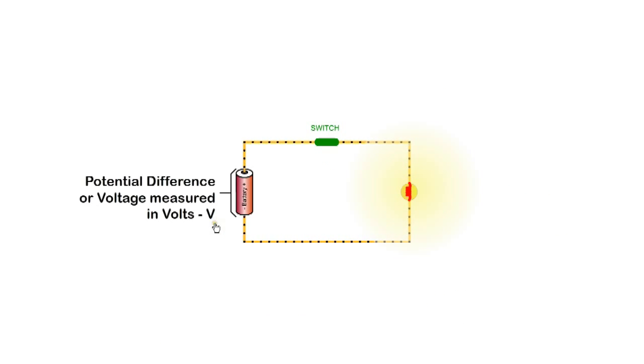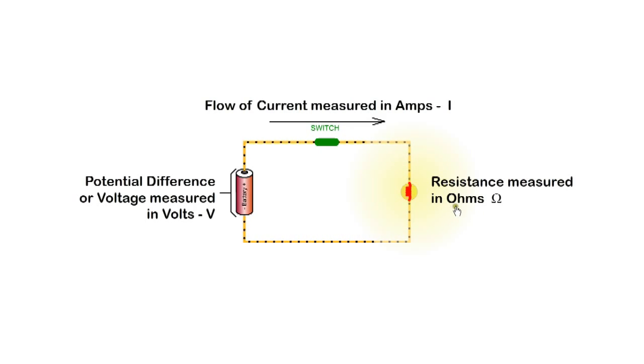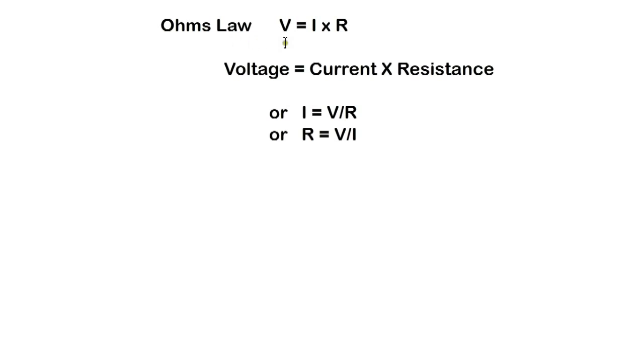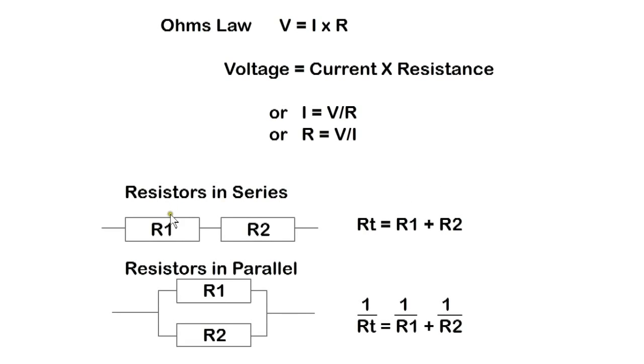The potential difference or voltage is measured in volts and has the symbol V. Current is measured in amps and has the symbol I. Resistance is measured in ohms. Electric calculations are based on Ohm's law which states that voltage equals current multiplied by resistance, or I equals V over R, or R equals V over I. When resistors are connected in series, we add the values to get total resistance. With resistors in parallel, we use this formula.